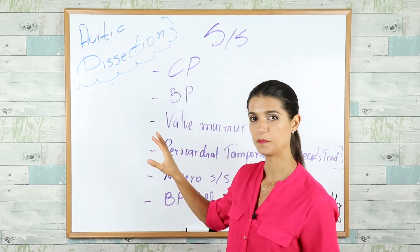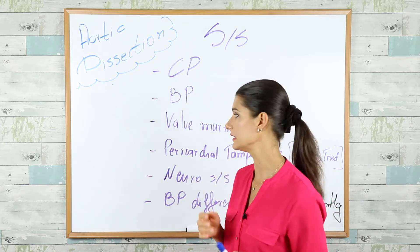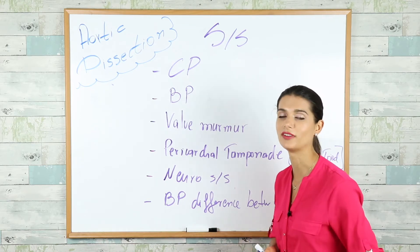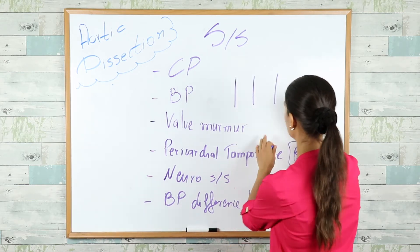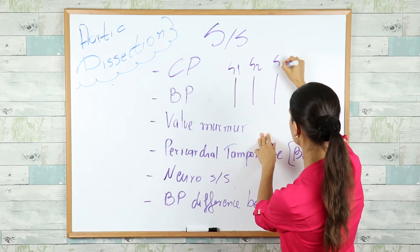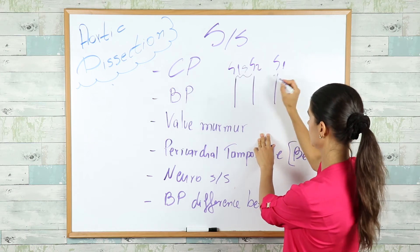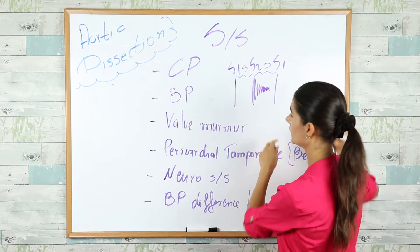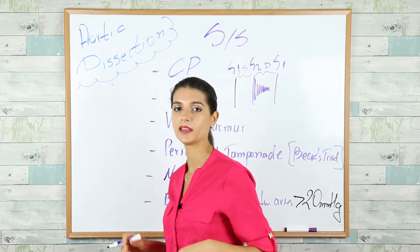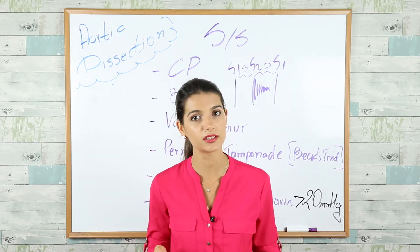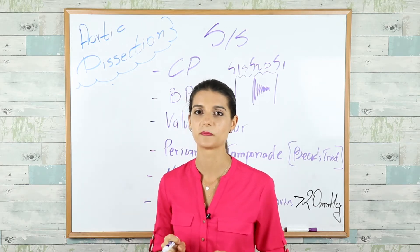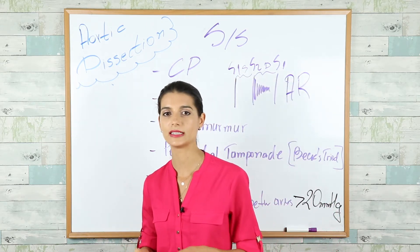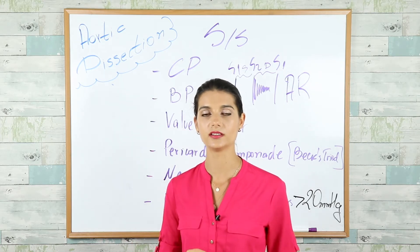If the proximal ascending aorta is involved, consider what murmur you might hear. A diastolic decrescendo murmur heard best at the lower left sternal border when the patient is sitting up and leaning forward during expiration — that is aortic regurgitation. We have a video on heart murmurs coming up that will help you remember murmurs forever.